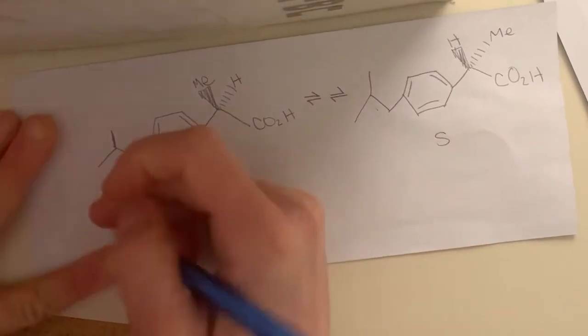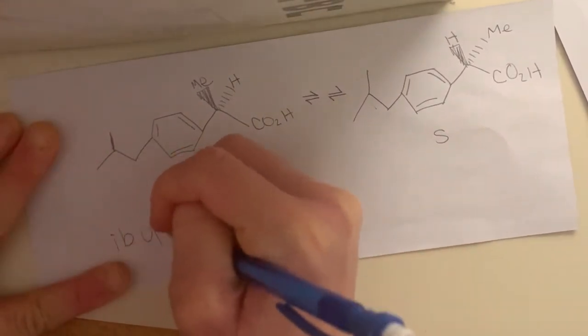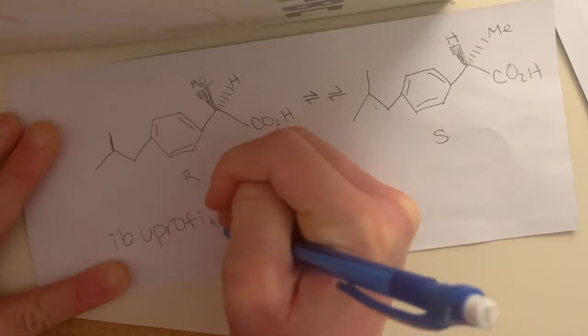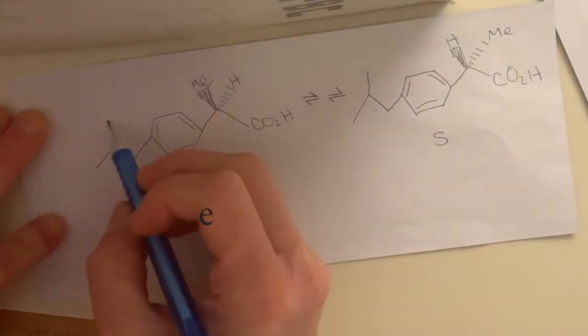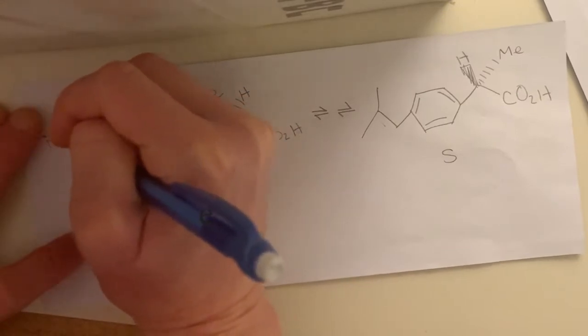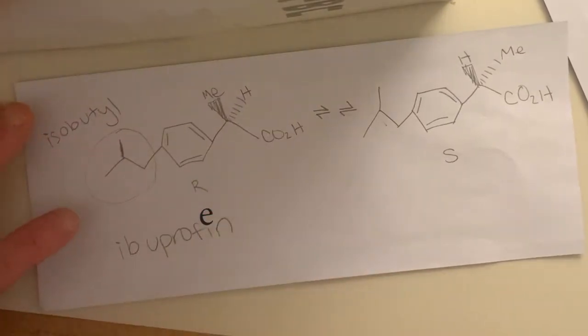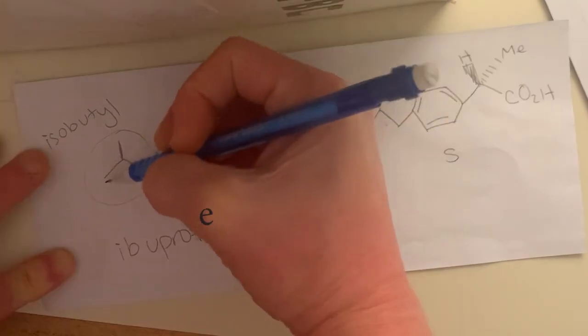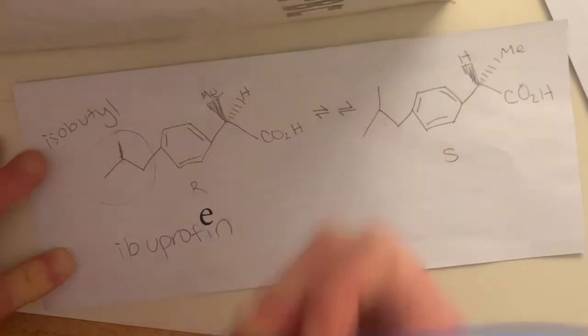So ibuprofen, so this, that's isobutyl. So basically, isobutyl means that we have four carbons, so one, two, three, four carbons.